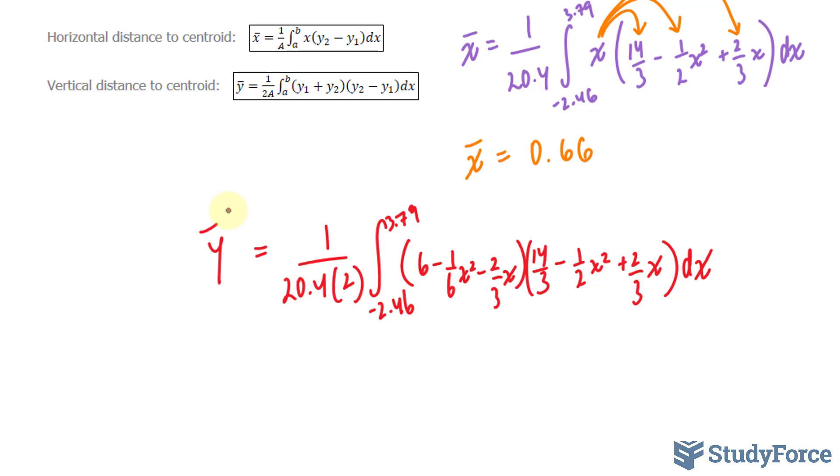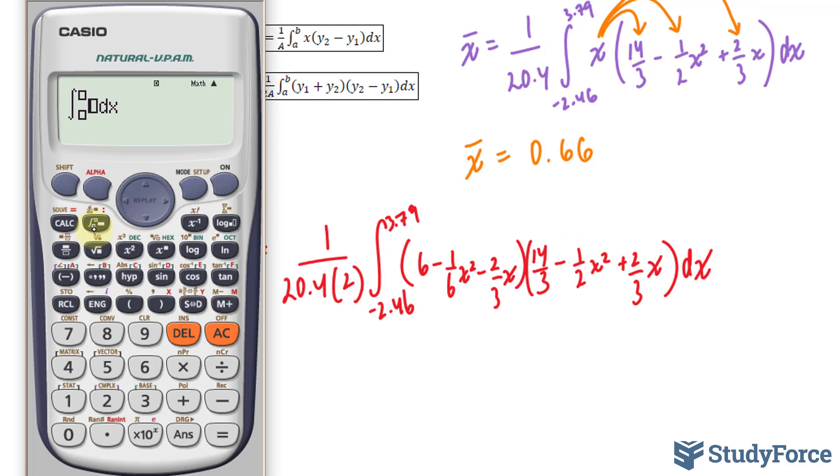Here's how to do that. You start by clicking this button. And now, you'll input your function. We have 6 minus 1 over 6 x to the power of 2 minus 2 over 3 times x. Open up another bracket to represent now this expression. We have 14 over 3 minus 1 over 2 times x to the power of 2 plus 2 over 3 times x. Close that. Now we'll input our bounds. Negative 2.46, 3.79. Now we'll take this number and divide it by 20.4 times 2. Divided by 20.4 times 2. This gives us 2.57.